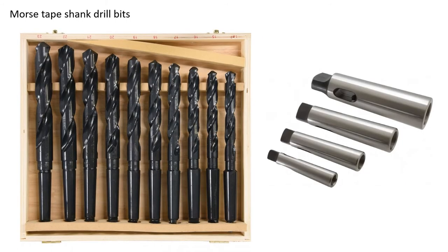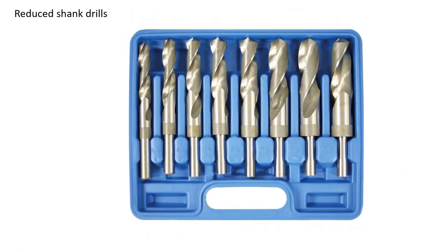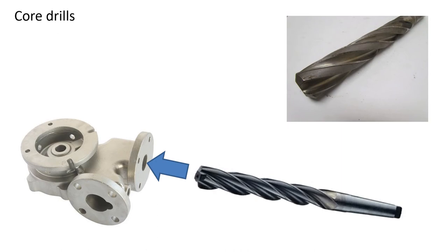Drills and drill sets are available with Morse taper shanks for use on drill presses, mills, and lathe tailstocks — note you may need to sleeve the taper to fit your machine. Reduced shank drills come in sets and individually — be careful, as chucks have a rated capacity matched to machine horsepower, and the excessive chip load of a reduced shank drill may cause a motor to stall or a power tool to grab and cause injury. Core drills are used to drill out cast holes in castings, with 4, 6, or 8 flutes and a thick core that resists bending and deflection. Core drills cannot start holes due to their large web area.